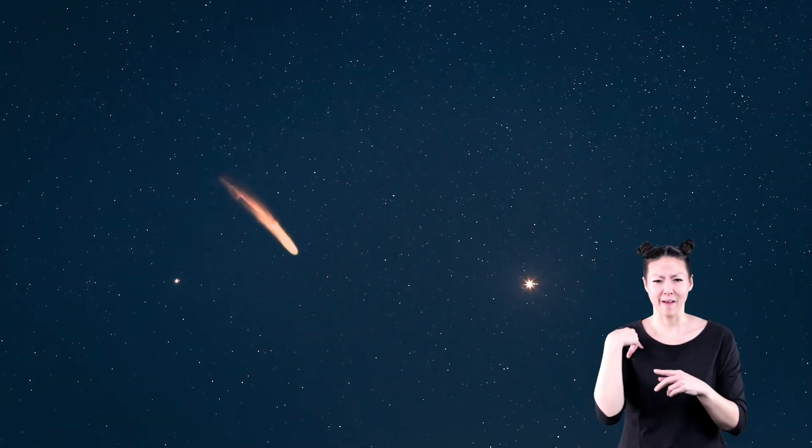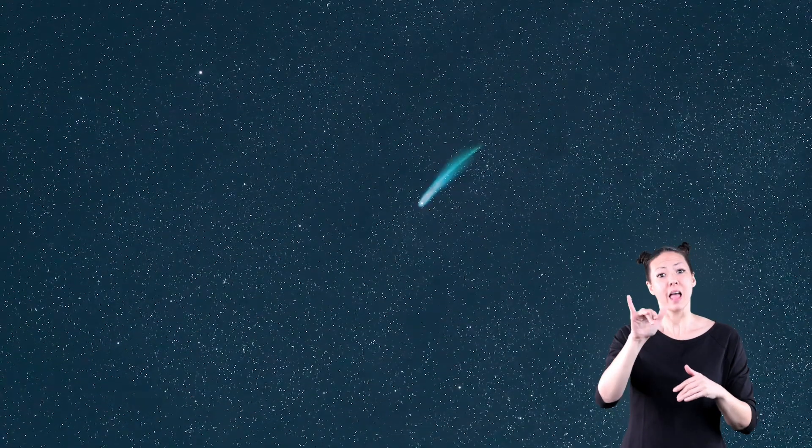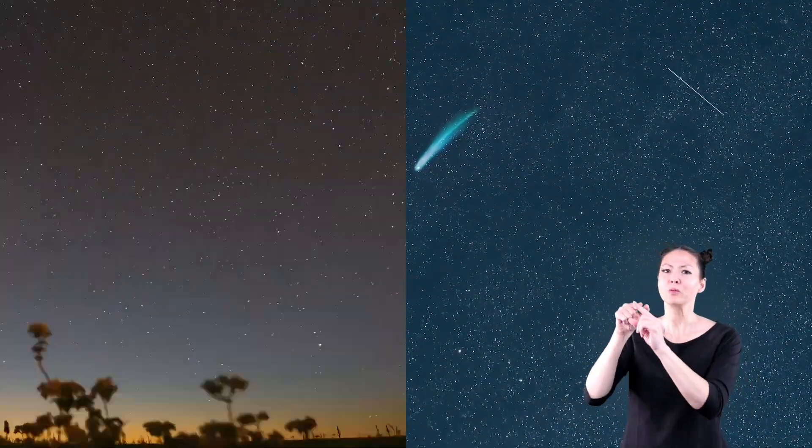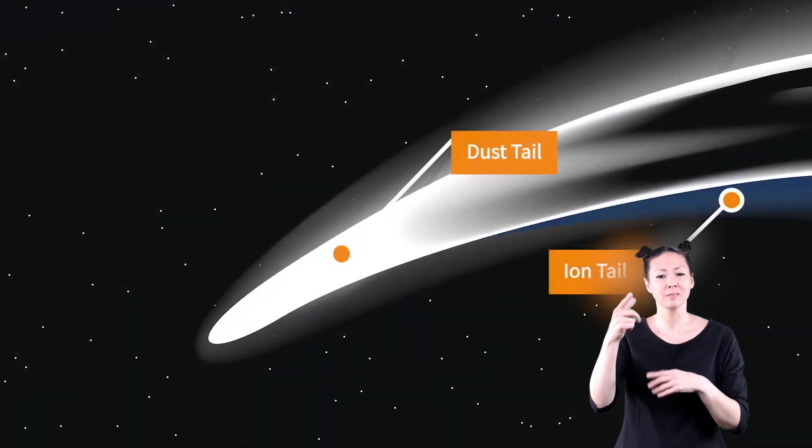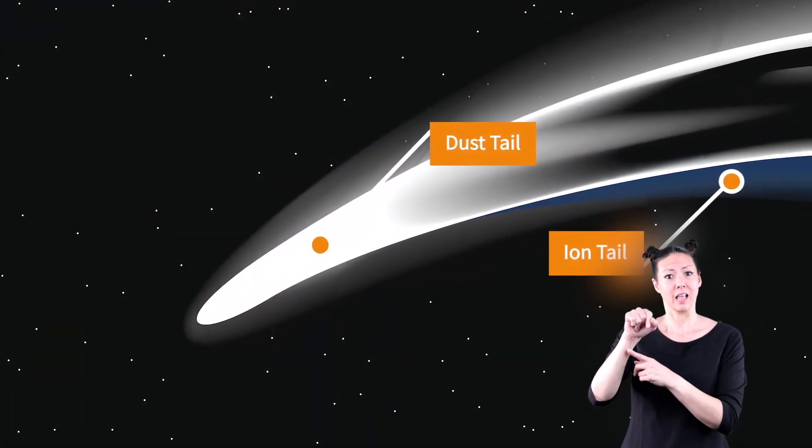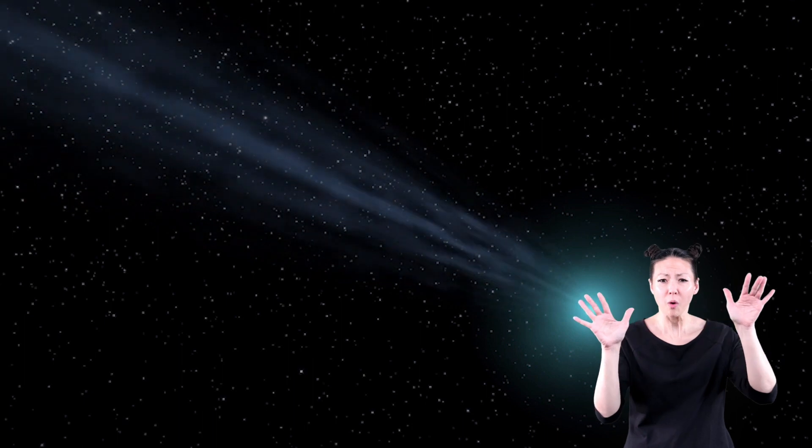Comets are pretty cool because they don't just shine as one big ball like a star does. Comets have tails and these tails shine too. In fact, the tail of a comet is actually the most visible part of a comet. The sun shining on the comet is what causes it to glow. The tails are called dust tails and ion tails. Some tails can be millions of miles long. The tails are made up of gases and tiny dust particles that are blown away from the nucleus by solar wind.